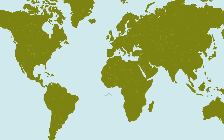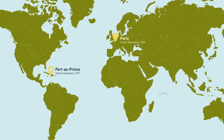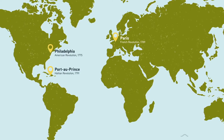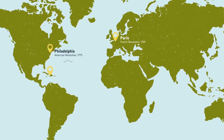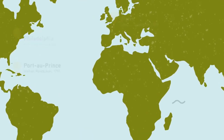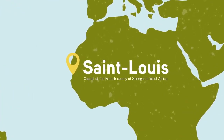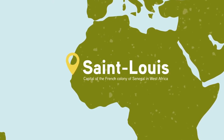To answer these questions, we must look at the long 19th century from several perspectives. The great revolutionary cities of the age, such as Port-au-Prince, Paris, and Philadelphia, certainly matter. But there are also some less obvious locations around the world that participated in this age of revolutions in different ways. One was the port town of Saint Louis, Senegal in West Africa.